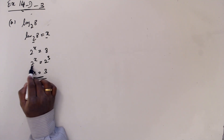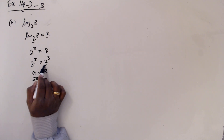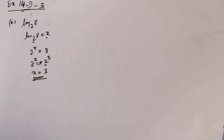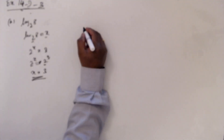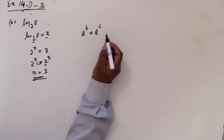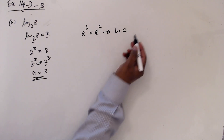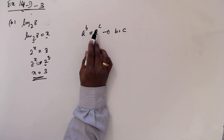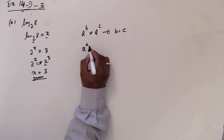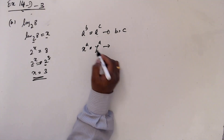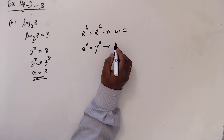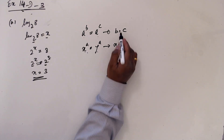Because if the base is the same, then to make equal, the only possibility is the power has to be the same. So a to b equals a to c implies b equals c — base is same, then to make equal, b and c have to be equal. Or if x to a equals y to a, then if the power is same, the base has to be the same, then x equals y.